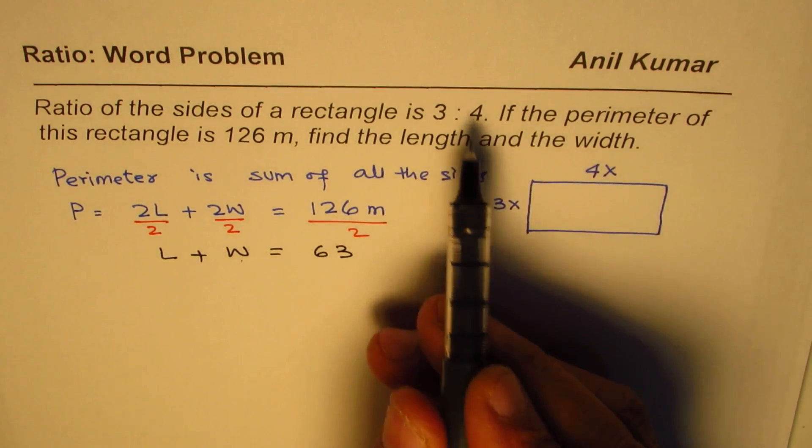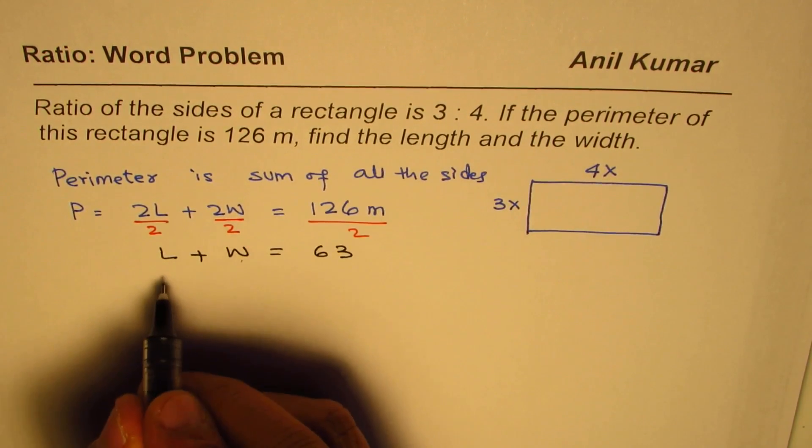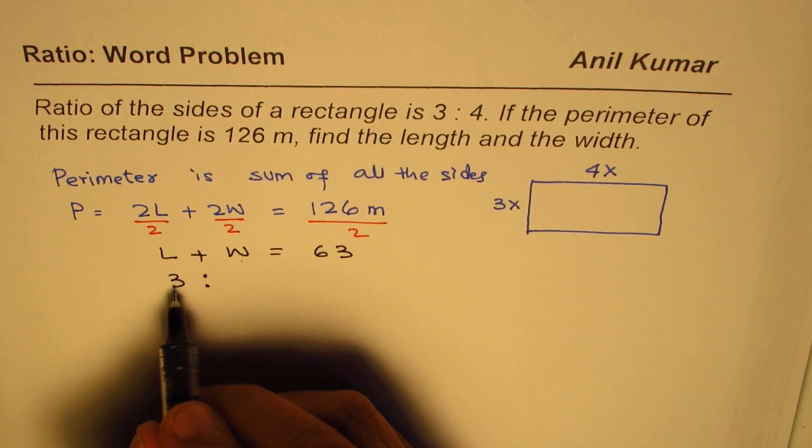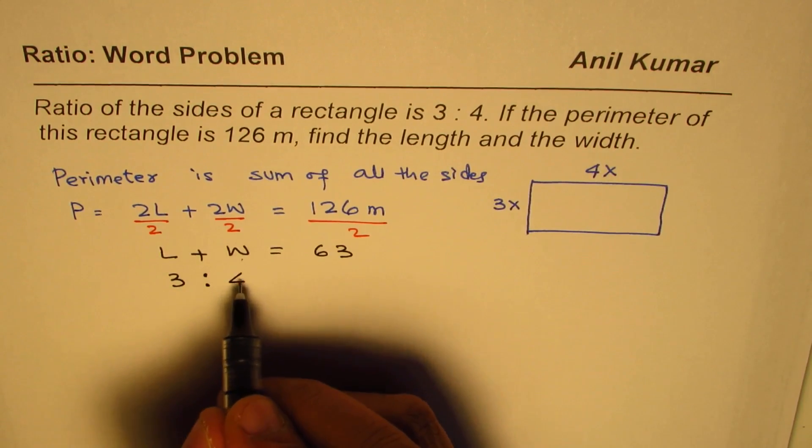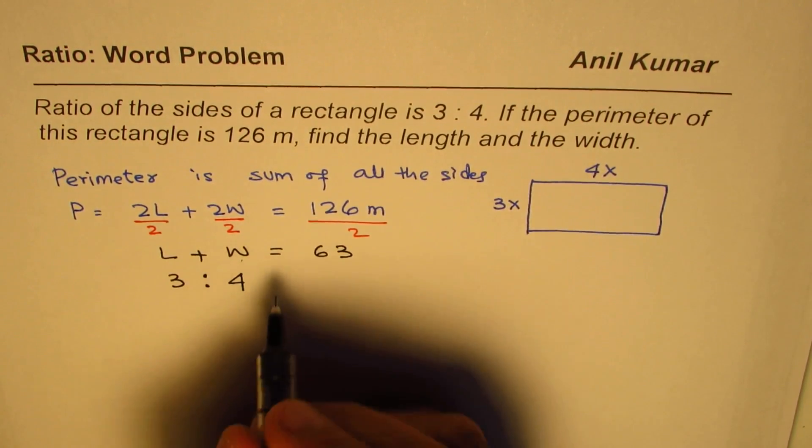Now, what we have here is the ratio of, we have ratio of length and width is 3 is to, I mean, because length is normally more, anyway, 3 is to 4 is the ratio. At the end, we'll change length to be a longer side.